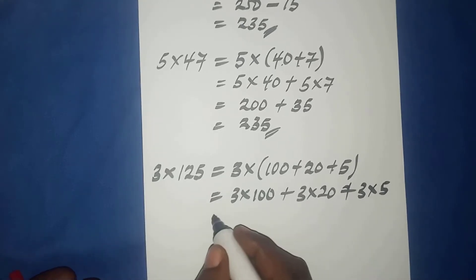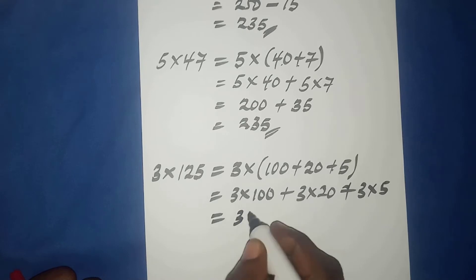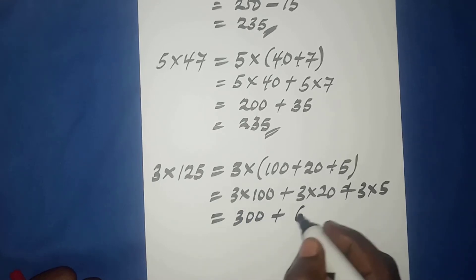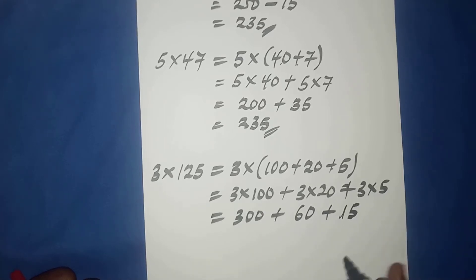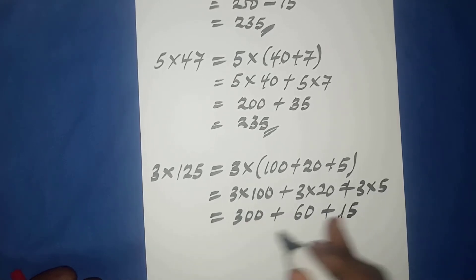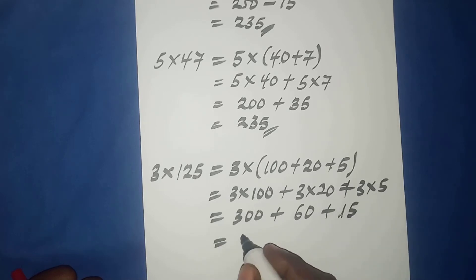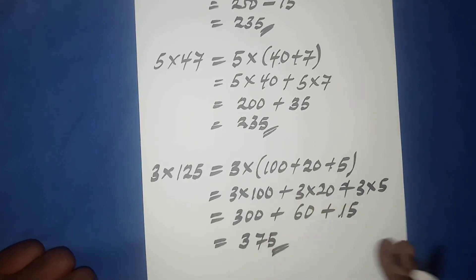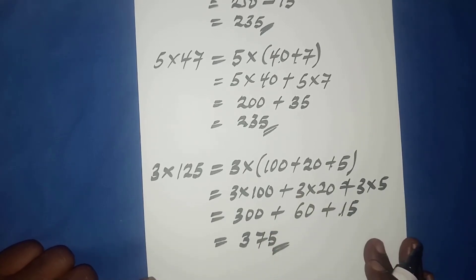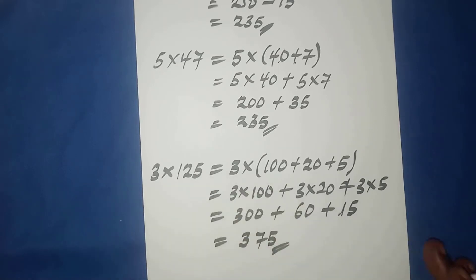Using the distributive property: three times one hundred plus three times twenty plus three times five. This equals three hundred plus sixty plus fifteen. Three hundred plus sixty is three hundred sixty, plus fifteen gives three hundred seventy-five. The distributive property is most helpful when performing operations involving large values.